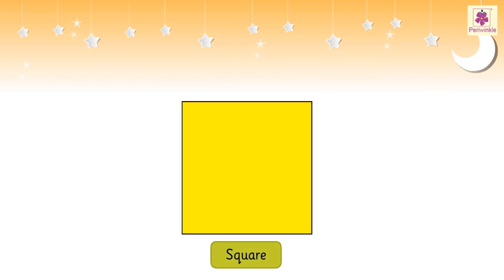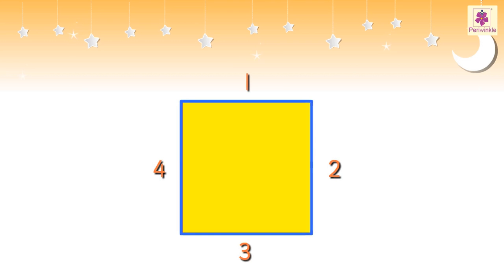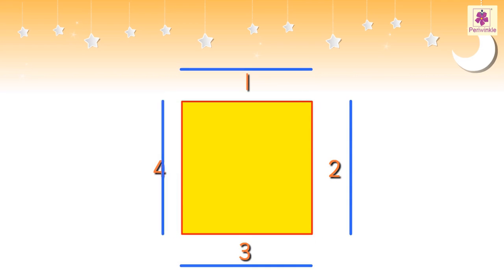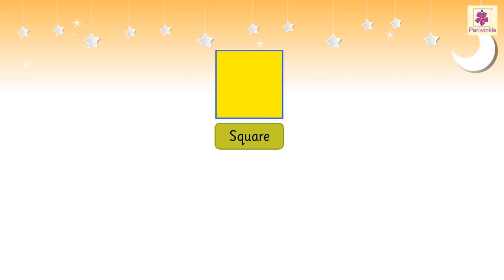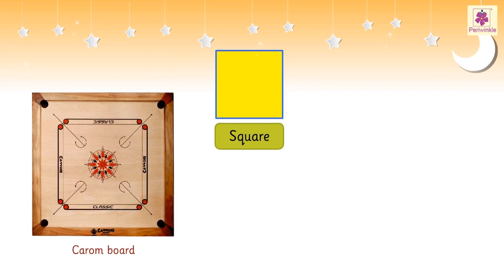This is a square. A square has four sides. All the sides of a square are equal in length. Examples of a square are a carom board and a handkerchief.